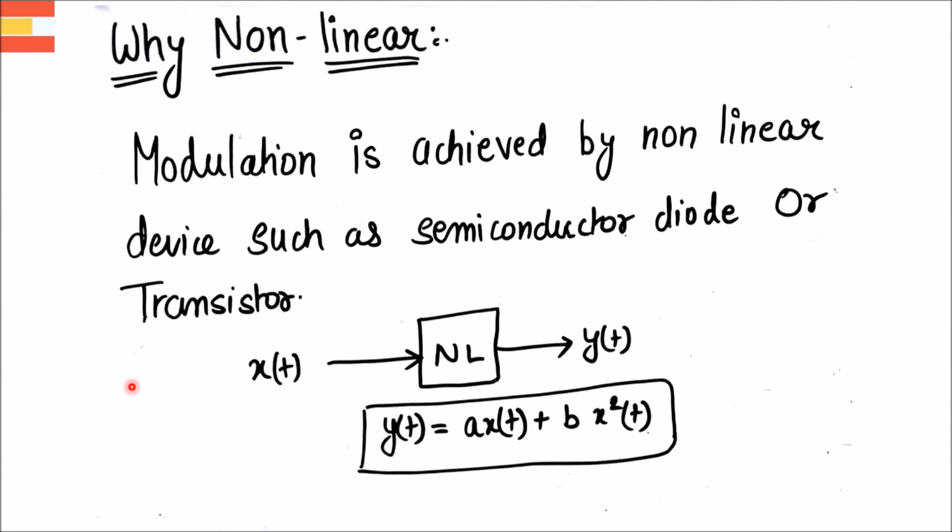In a nonlinear modulator, modulation is achieved by nonlinear devices such as semiconductor diode or transistor. You can see by the block diagram there is a nonlinear device which is expressed as NL whose output is y(t) and input is x(t). We can represent y(t) as ax(t) plus bx²(t) plus cx³(t) plus dx⁴(t) and so on.